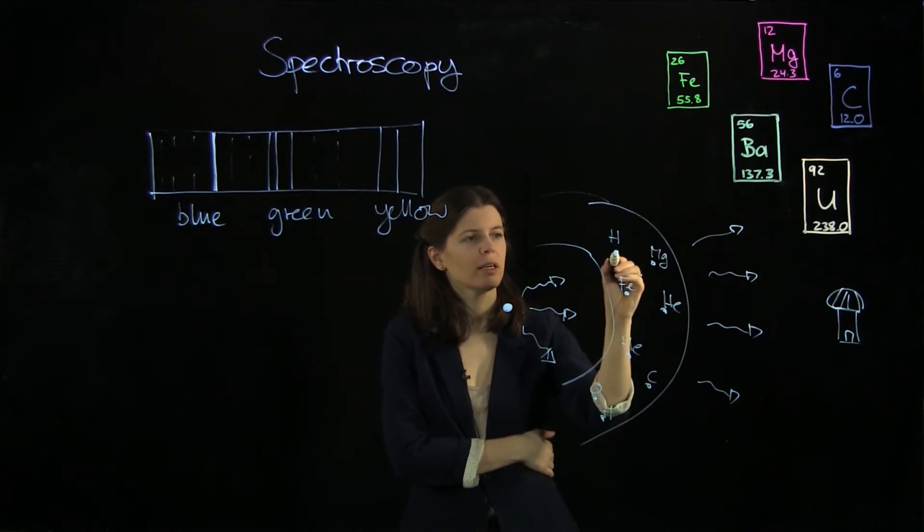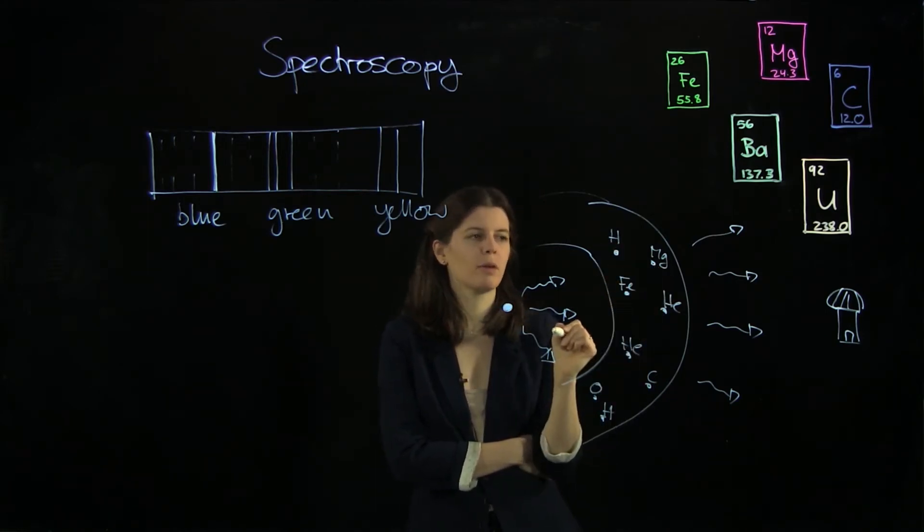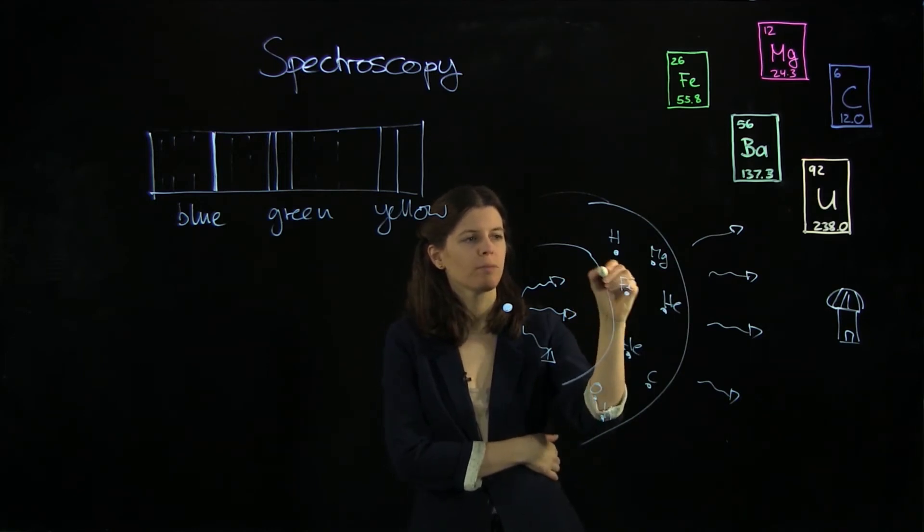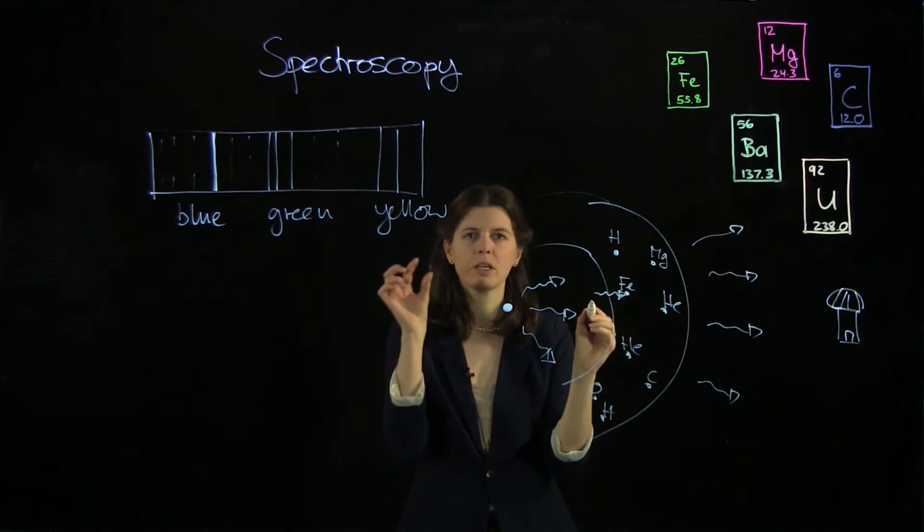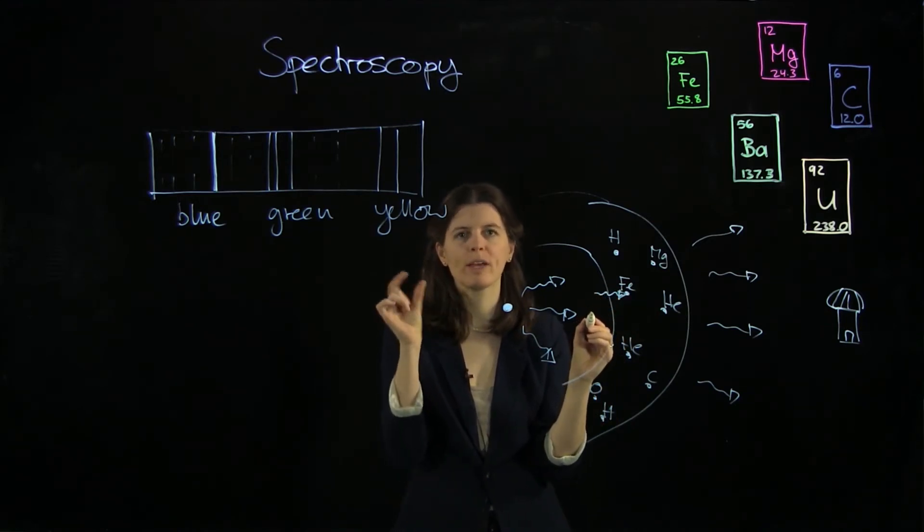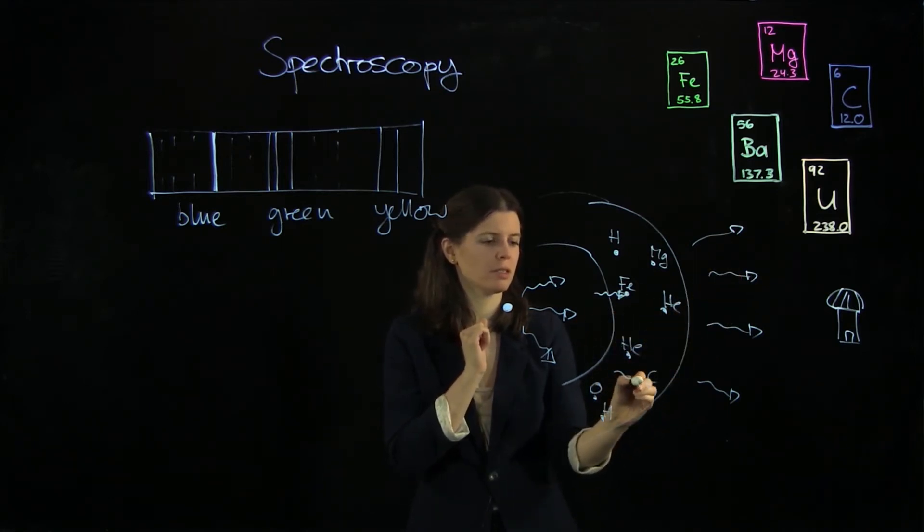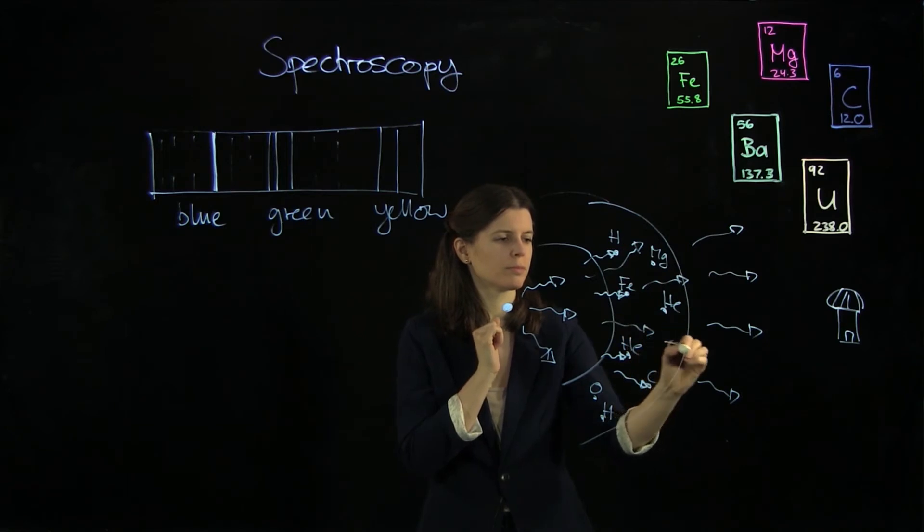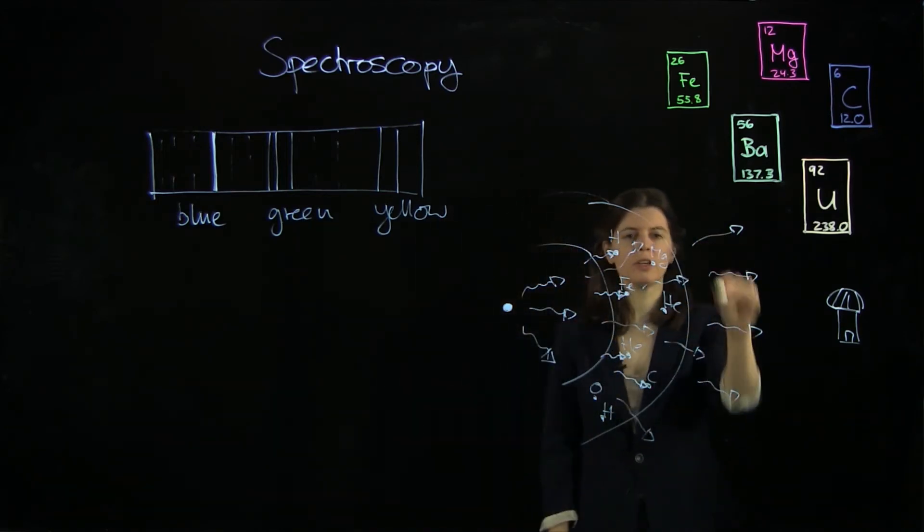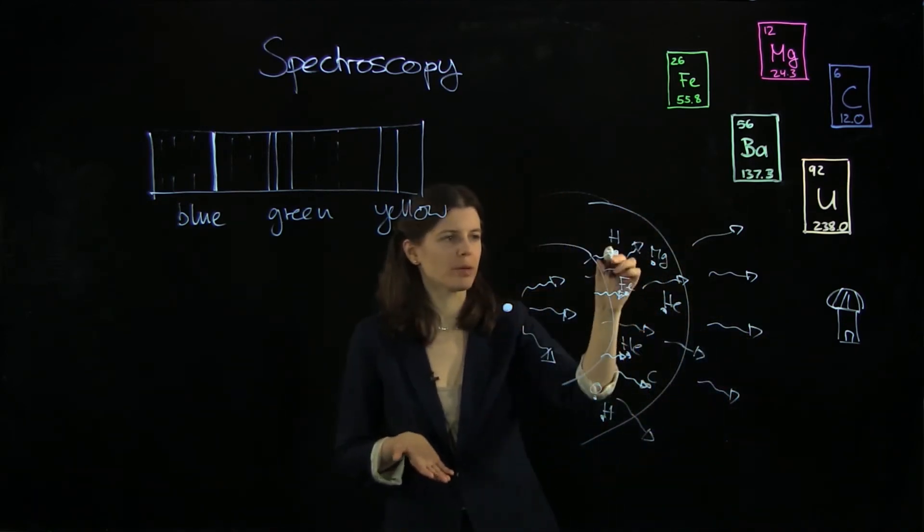And so what happens is that all elements, hydrogen and helium as well plus magnesium and so forth, they absorb, so let's draw this here, they absorb photons with a very specific energy or wavelength, that's equivalent. And so what comes out of here, here there's one that gets absorbed, all these get absorbed, and then there are some that pass through.